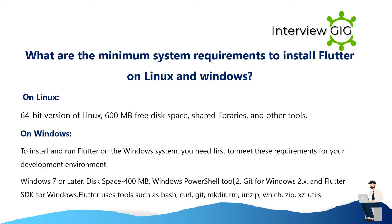What are the minimum system requirements to install Flutter on Linux and Windows? On Linux: 64-bit version of Linux, 600 MB free disk space, shared libraries, and other tools. On Windows: Windows 7 or later, 400 MB disk space, Windows PowerShell, Git for Windows, and Flutter SDK. Flutter also uses tools such as bash, curl, git, unzip, which, zip, and xz-utils.